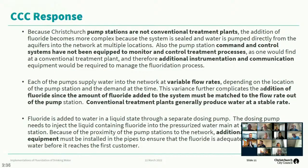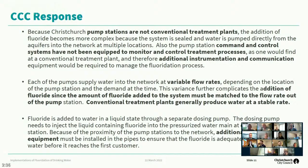Because our pump stations are not treatment plants, our command and control systems have not been equipped to monitor and control treatment processes. We would therefore have to provide additional instrumentation and communication equipment to manage the fluoridation process. Also, our pump stations supply water at variable flow rates depending on demand at any given time, meaning we must continuously match the amount of fluoride dosed into the system with the flow rate out of the pump stations. Conventional treatment plants normally produce water at a more stable rate.